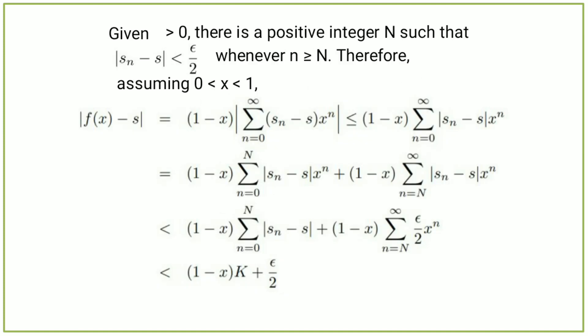Given epsilon greater than 0, there is a positive integer N such that mod of sₙ minus s is less than epsilon over 2 whenever n is greater than or equal to N. Therefore, assuming 0 less than x less than 1, mod of f(x) minus s equals (1 minus x) times mod of the summation from n equals 0 to infinity of (sₙ minus s) times xⁿ, which is less than or equal to (1 minus x) times the summation from n equals 0 to N of mod of sₙ minus s times xⁿ, plus (1 minus x) times the summation from n equals N to infinity of mod of sₙ minus s times xⁿ, which is less than (1 minus x) times the summation from n equals N to infinity of (epsilon over 2) times xⁿ.